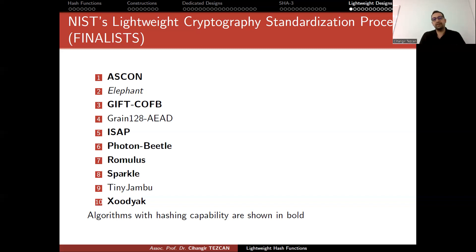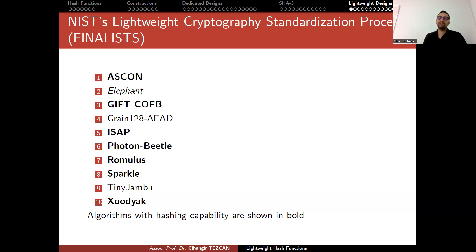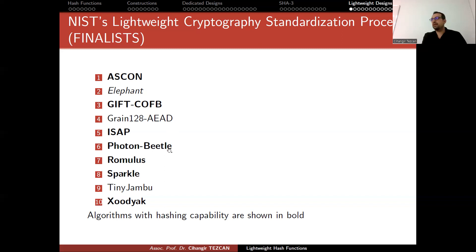Even if it is not going to be a standard, for instance if Ascon becomes the NIST winner of this competition, people will most probably be confident to use Ascon in hashing mode. A lot of designs allow hashing. Elephant supports hashing but the hashing output size is small, so it doesn't provide enough security — you can modify it and provide longer output if interested. At the NIST site we don't have a standard yet, but it looks like we are going to have one in the future.